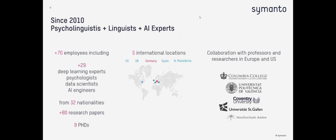CEMANTO was founded in 2010. We have a team of psycholinguists, linguists, AI experts, and software engineers — around 70 employees currently with 32 different nationalities. Together they have published more than 80 research papers and we have nine PhDs in the company. CEMANTO has offices in New York City, the UK, Nuremberg Germany as headquarters, Spain, and North Macedonia. We also have strong collaborations with professors and researchers across Europe and the United States.